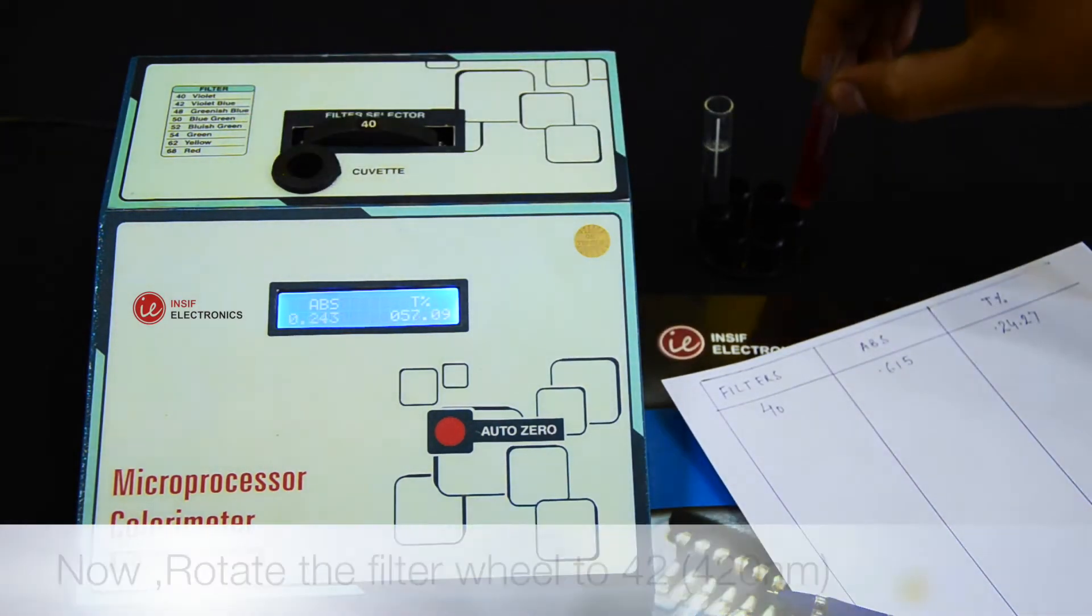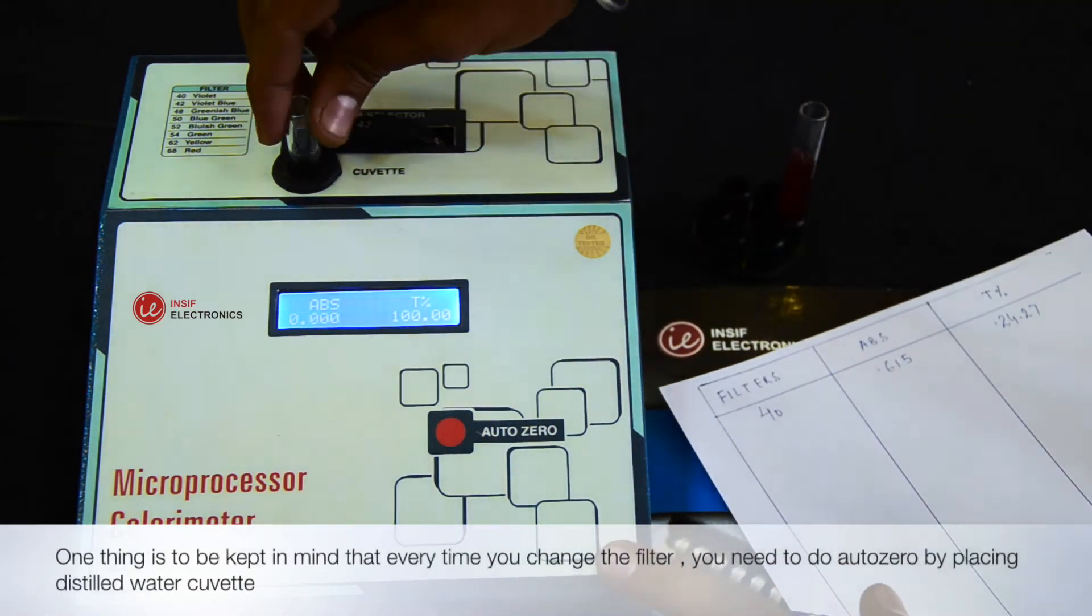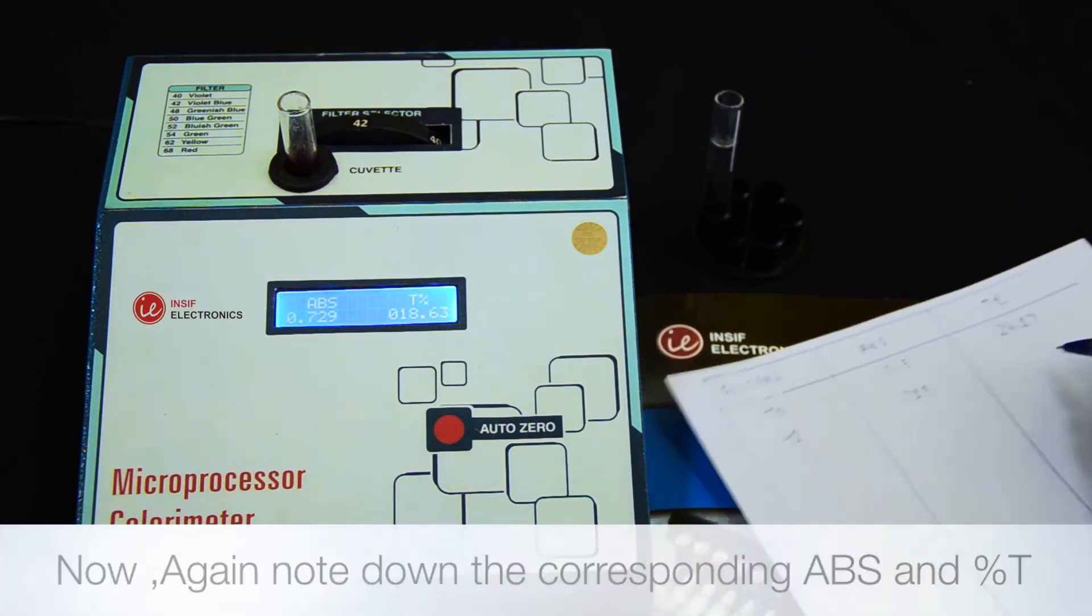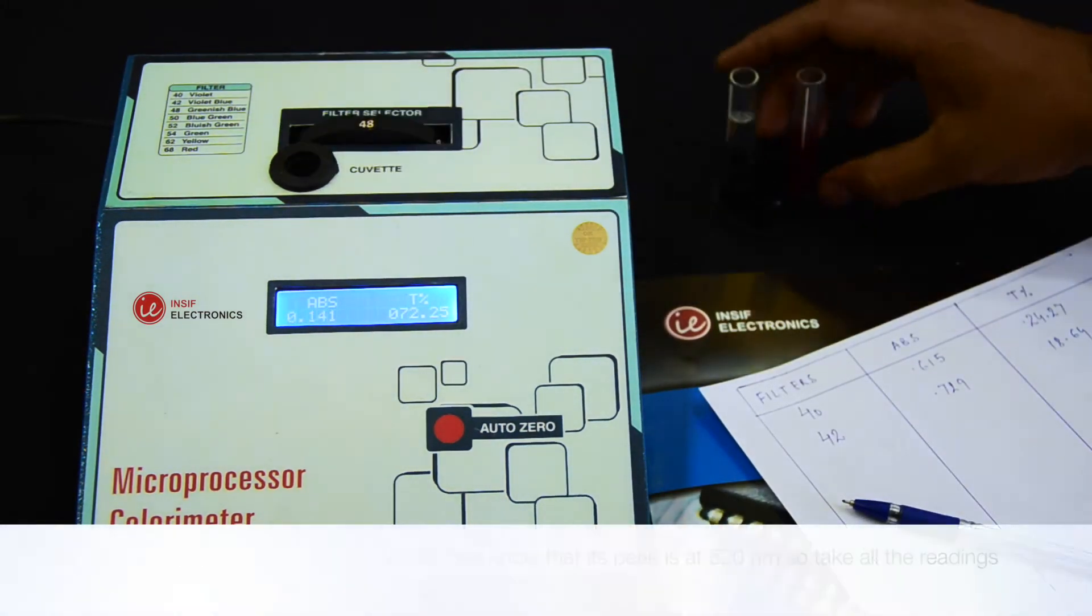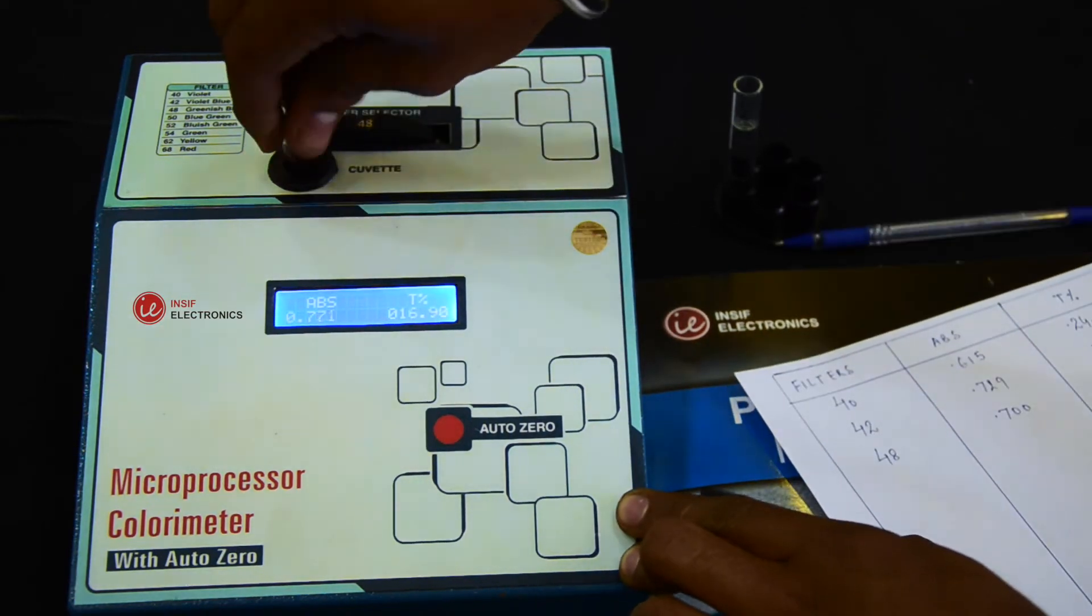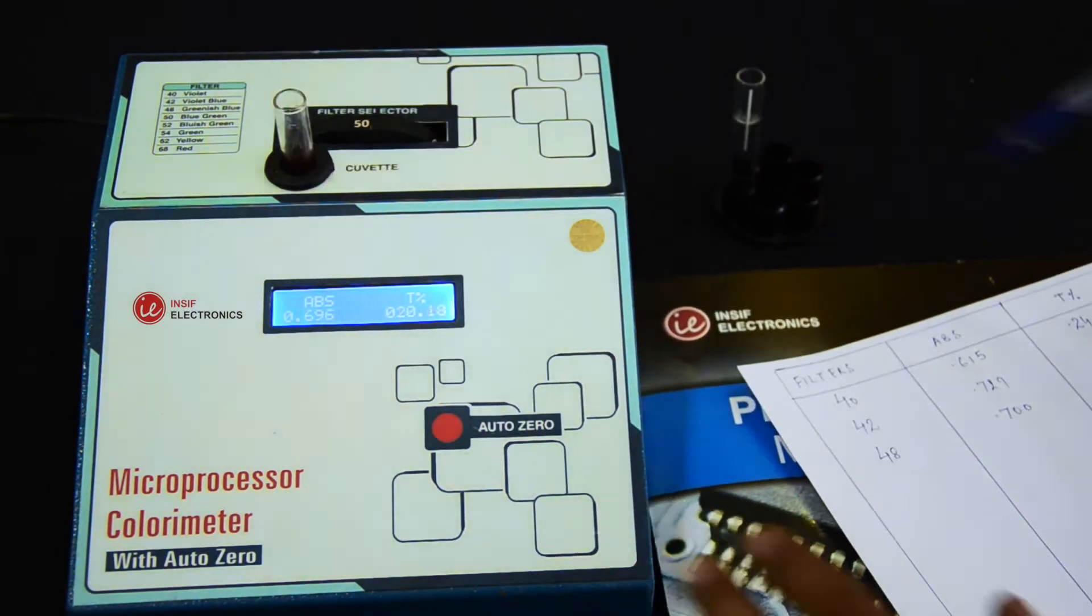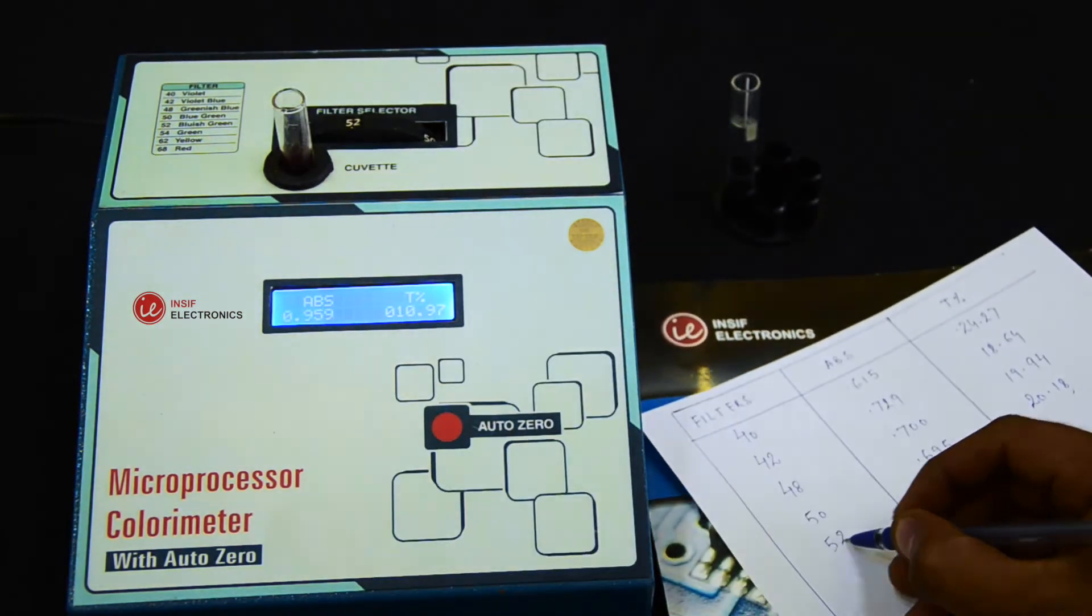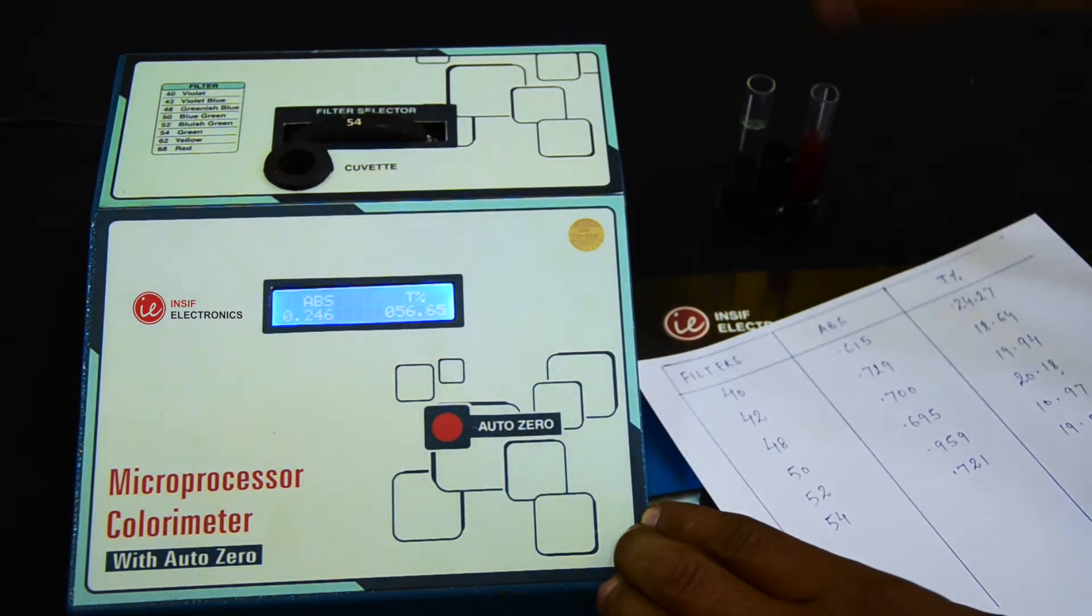Similarly, repeat the process for all other filters. One thing to be kept in mind is that every time you change the filter, you need to do AutoZero by placing the distilled water cuvette.